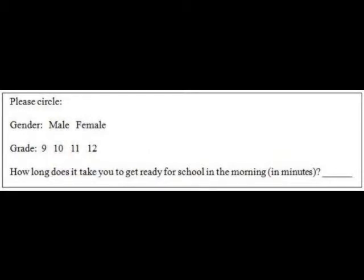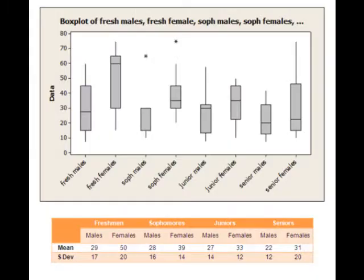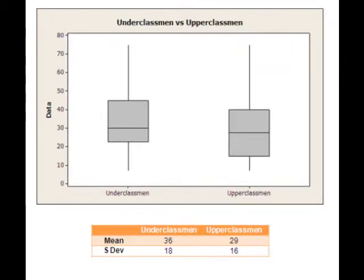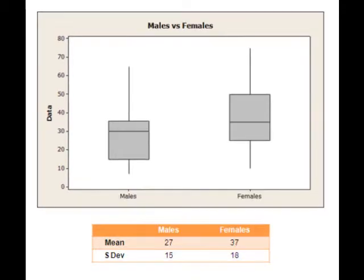The survey looked like this. After we collected the data, we analyzed and found the mean and standard deviation of each group. For each grade, the mean amount of time it takes girls to get ready in the morning is always bigger than the mean amount of time it takes boys. On average, freshmen take the most amount of time to get ready, and the times steadily decrease as the grades go up.